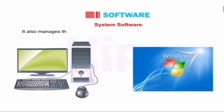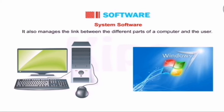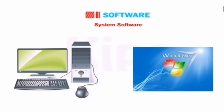The operating system is system software. It also manages the link between different parts of the computer and the user. It controls everything that happens on the computer — both the hardware parts and the user's work.